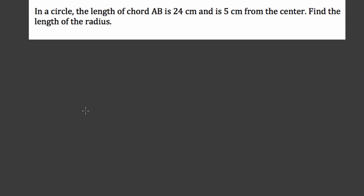Okay, so we're told here that we have a circle, and that the length of the chord AB is 24 centimeters, and it's located 5 centimeters from the center.